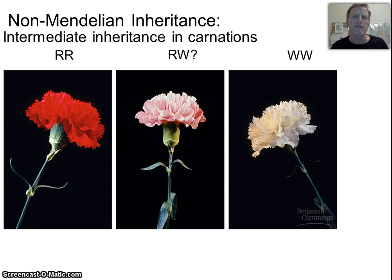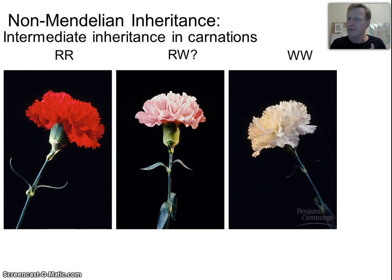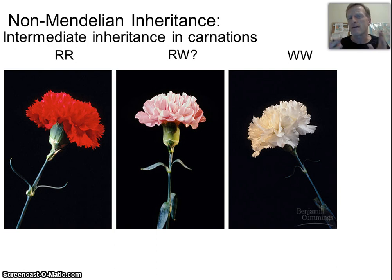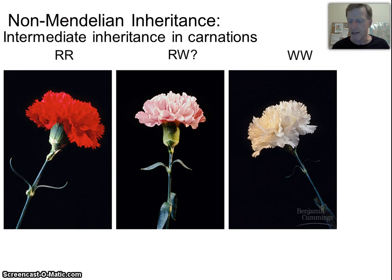We see this blending with a lot of things. If you have a tall person and a short person and they have kids, their kids will probably be somewhere in the middle. If you have someone with very dark pigmentation and someone with light pigmentation, the kids will probably have some kind of middle blended form. We do occasionally see this, but we say that dominance is definitely the rule most of the time. These exceptions we call intermediate inheritance.